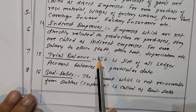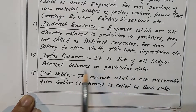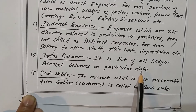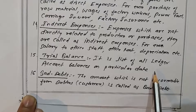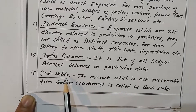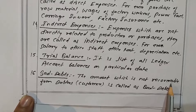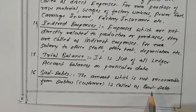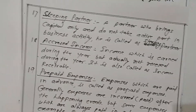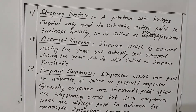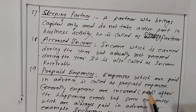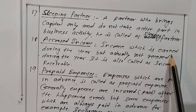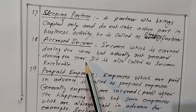What is a trial balance? It is a list of all ledger balances on a particular date. In this list, all types of accounts are included and the balances may be debit or credit balances. What is a bad debt? The amount which is not recoverable from debtors (customers) is called a bad debt — in simple terms, a debt which is irrecoverable. Who is a sleeping partner? A partner who brings capital only and does not take an active part in the business is called a sleeping partner. What is accrued income? Income which is earned during the year but not actually received during the year is called accrued income, also known as income receivable.